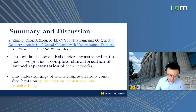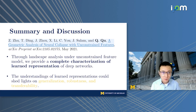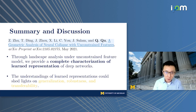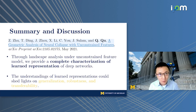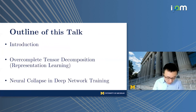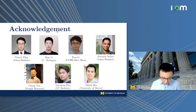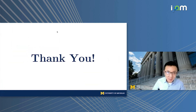To sum up, through this work we provide the first complete characterization of the learned representations of the last layer features and classifiers in deep networks. Understanding the last layer features and representations goes beyond network architectural design — it can potentially shed light on generalization, robustness, and transferability of deep networks, which could be interesting future work. I'd like to thank my wonderful collaborators for this line of work. Thank you so much, and I'd like to take any questions.